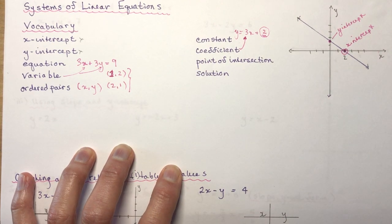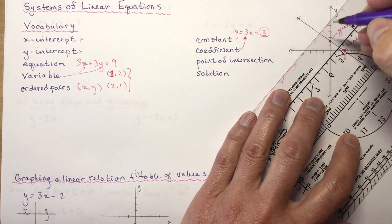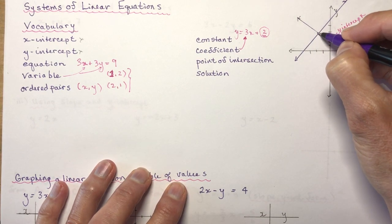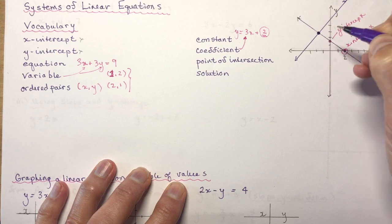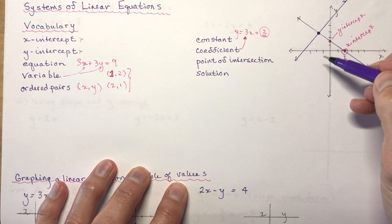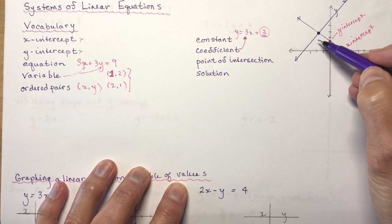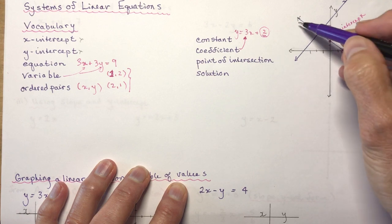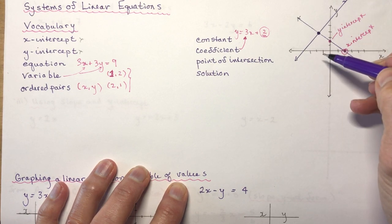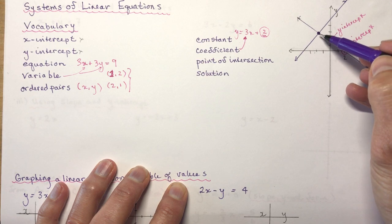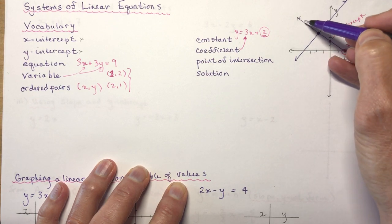A point of intersection means you have to have two lines — a line can't intersect itself. But if I have another line, the coordinates for this point right here would give me the solution to the system of equations. The point of intersection would be an ordered pair where they intersect, and that point would satisfy both equations. So if this coordinate was, let's say, minus 2 and 3, then minus 2 and 3 would be on this line and also on the other line.